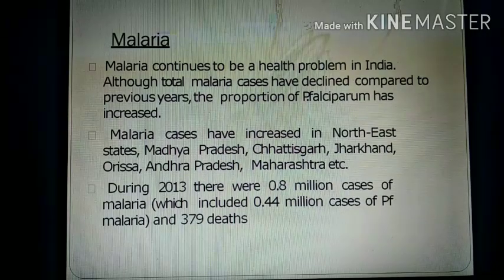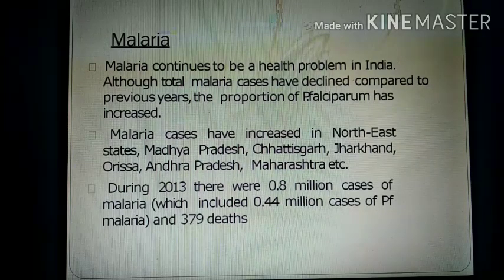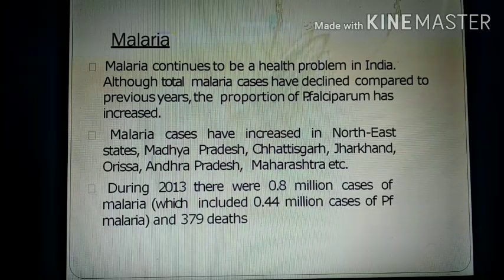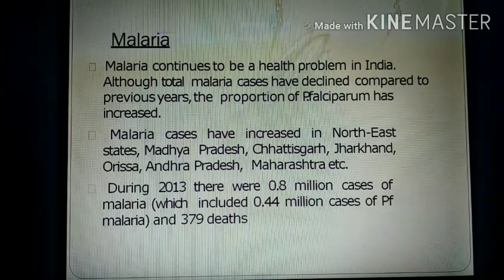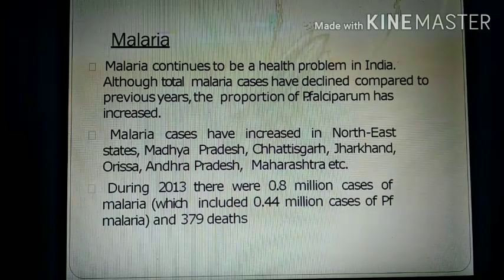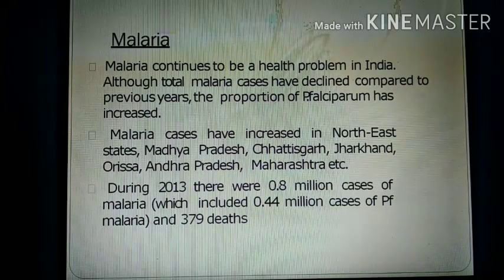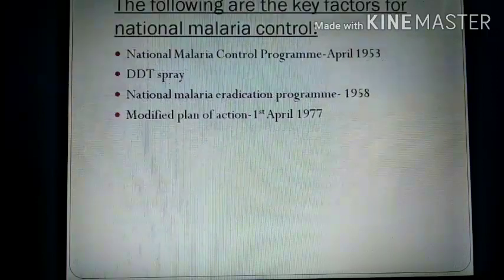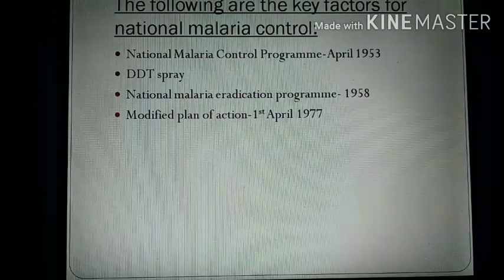Although total malaria cases have declined compared to previous years, the proportion of Plasmodium falciparum has increased. Malaria cases have increased in states such as Madhya Pradesh, Chhattisgarh, Jharkhand, Odisha, Andhra Pradesh, and Maharashtra. In 2013, there were 0.8 million cases of malaria and 379 deaths due to malaria.